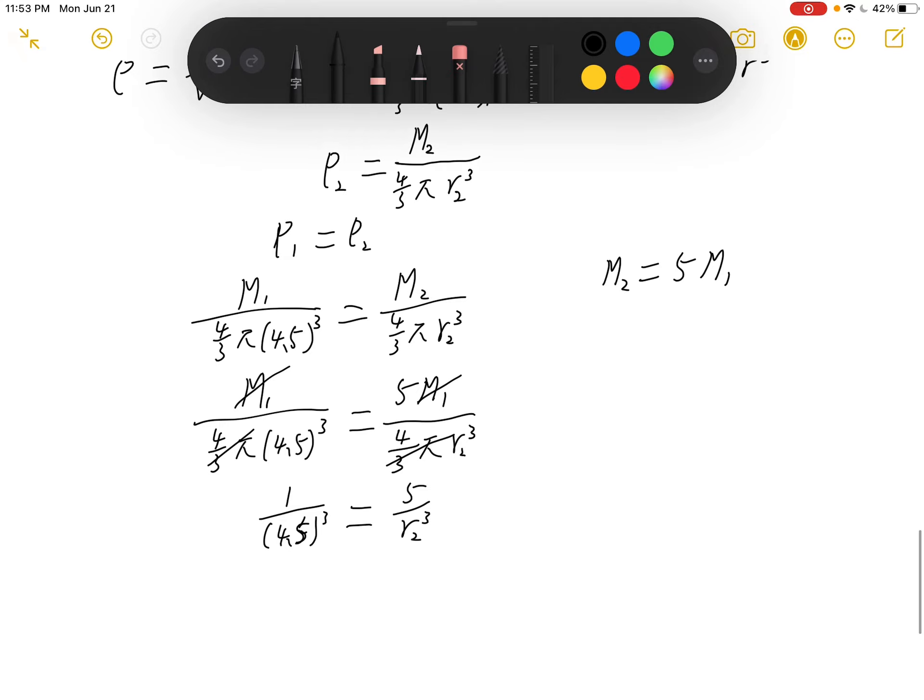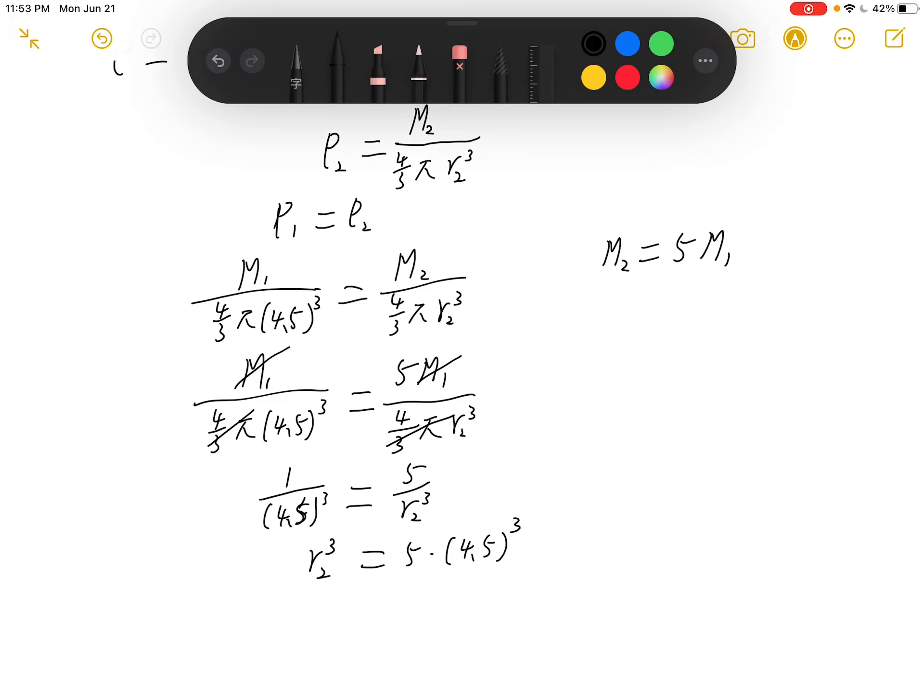So we would eventually have r2 cubed equals 5 times 4.5 cubed. By calculating this, we would have r2, the radius of the second rock equals 7.695 centimeters.